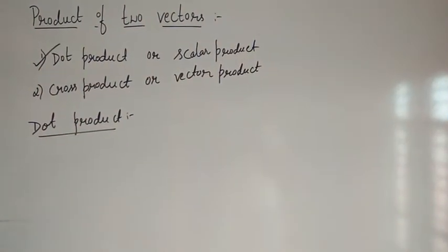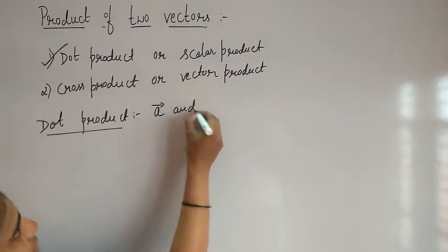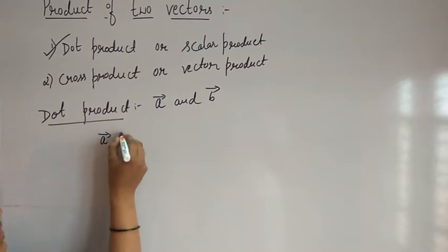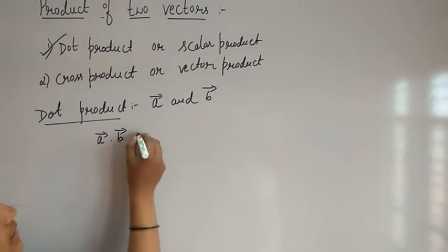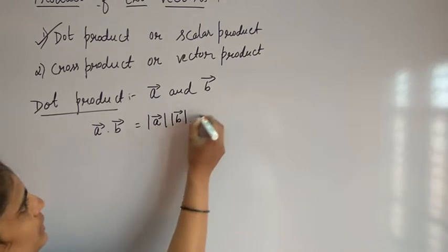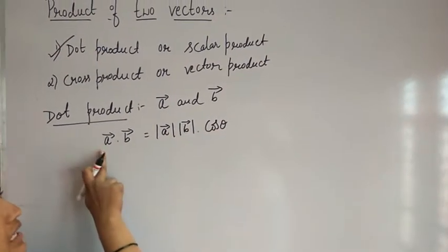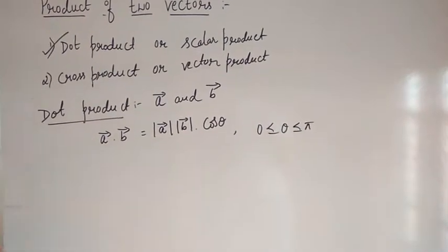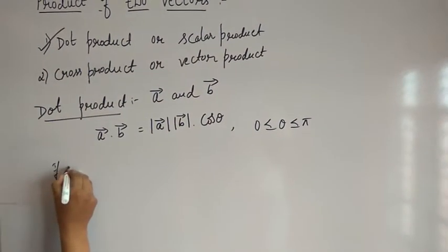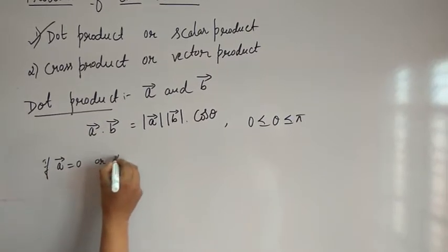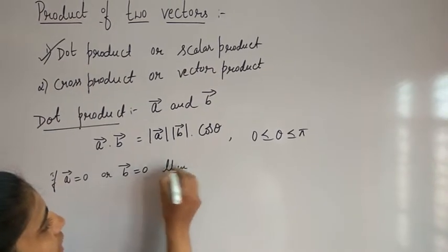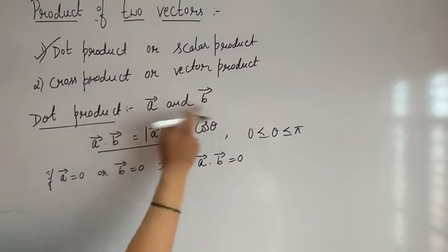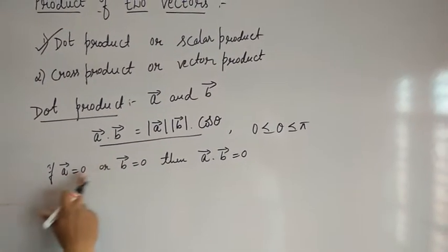The scalar product of any two non-zero vectors, vector A and vector B — the scalar product or dot product is denoted by vector A dot vector B, and is defined by magnitude of vector A into magnitude of vector B into cos theta, where theta is the angle between vector A and vector B, and theta lies between 0 to 180 degree. If any one of the vectors is zero — if vector A is zero vector or vector B is zero vector — then the dot product is defined as vector A dot vector B equals zero.